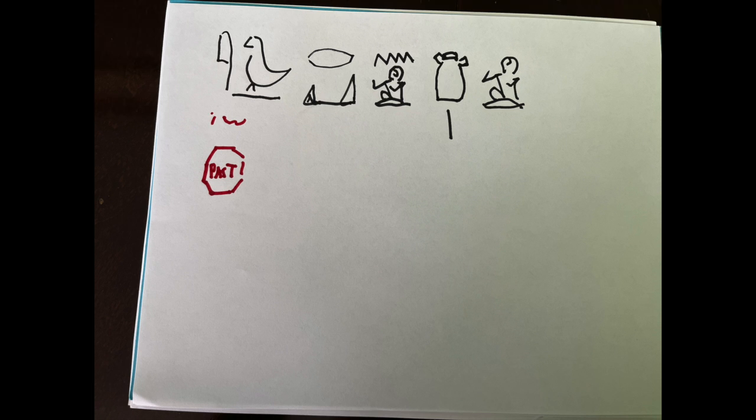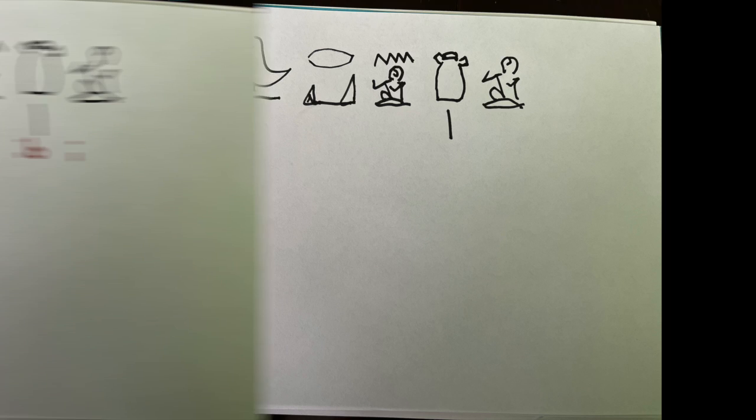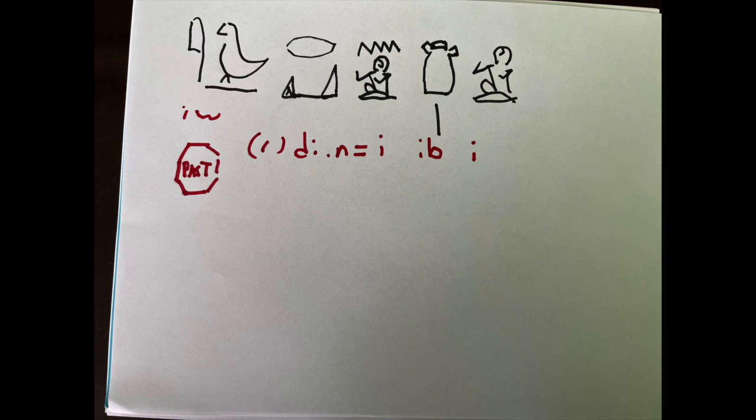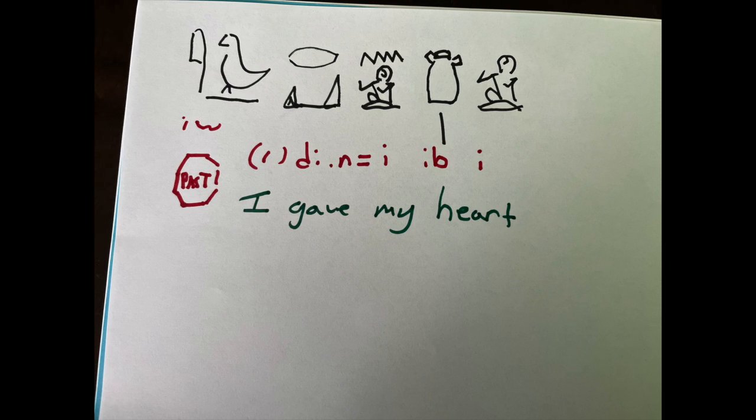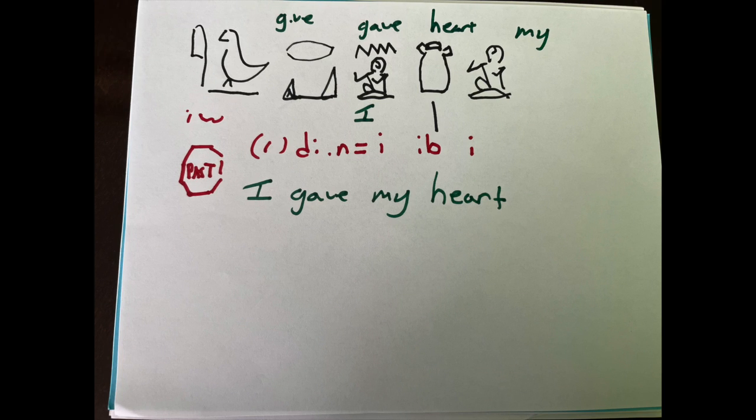This sentence: first we see the stop sign ew, which means we're going into the past, so we know we're past tense. Then we have the verb radi, to give, n for the ed past tense, the man sitting for i, and then we have the ideogram heart and the ideogram for my at the end. So we have two ideograms in this sentence.